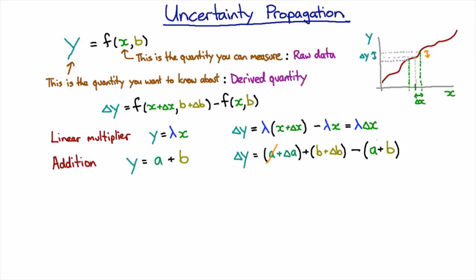If we expand out the brackets, the a cancels with the minus a and the b cancels with the minus b, and we just get these two things added together. So for addition, you add the uncertainties.